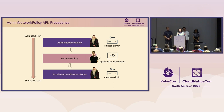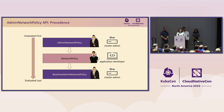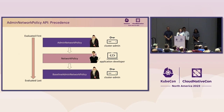We have introduced three layers of precedence, evaluated top to bottom. The first is Admin Network Policy — managed by cluster admins. As soon as it has a decision on a connection, it will be applied and nothing else can change it. If Admin Network Policy didn't match your connection, then Network Policy is the next layer applied — managed by application developers. The third layer is Baseline Admin Network Policy, also managed by cluster admins, evaluated last.